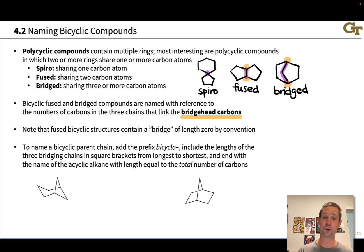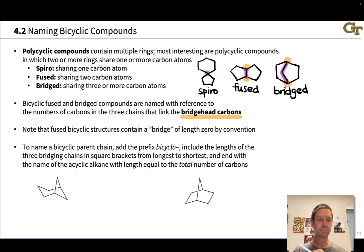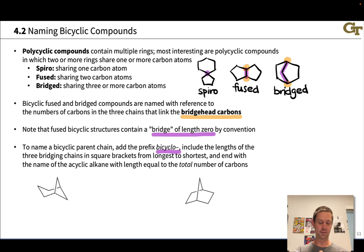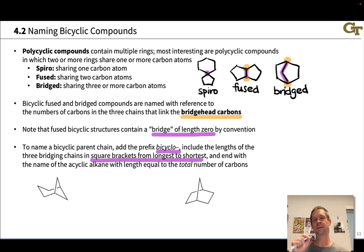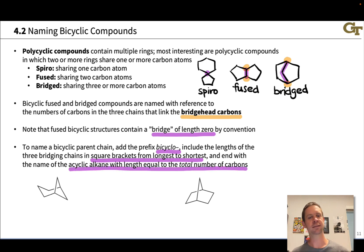First, count the number of carbons in the full bicyclic system — this gives the root name. For example, seven carbons gives a heptane root, and we append the prefix bicyclo to get bicycloheptane. Between 'bicyclo' and 'heptane' we insert a series of numbers in square brackets separated by periods, representing the lengths of the bridges connecting the two bridgehead carbons. There are generally three bridges — including potentially a bridge of length zero for fused systems — listed from largest to smallest. The name ends with the acyclic alkane corresponding to the total carbon count, for example heptane.